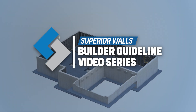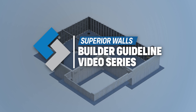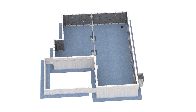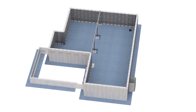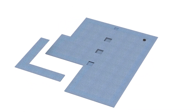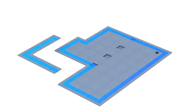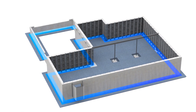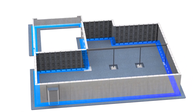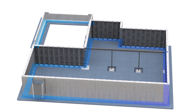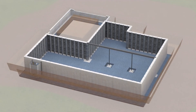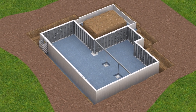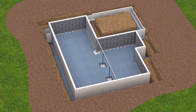Welcome to the Superior Walls Builder Guidelines video series. This series is designed to give you a better understanding of how to work with Superior Walls precast wall systems on the job site. In this video, we'll cover the purpose and performance of footings — specifically, our preferred use of crushed stone footings beneath Superior Walls panels for below grade applications. While Superior Walls panels can be installed on almost any footing type, they are most commonly installed on crushed stone footings for the construction benefits highlighted in this video.